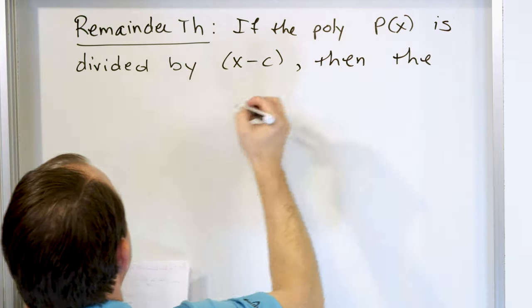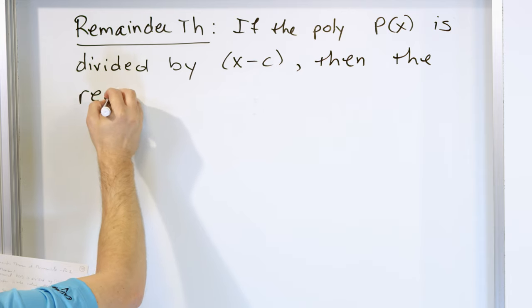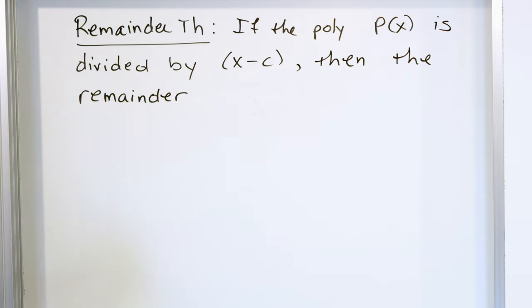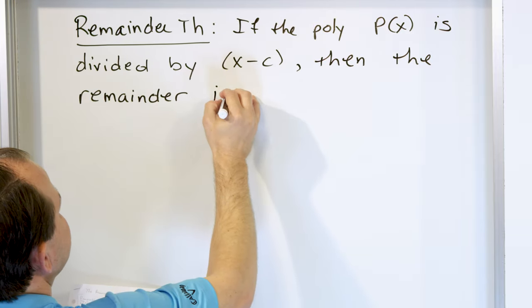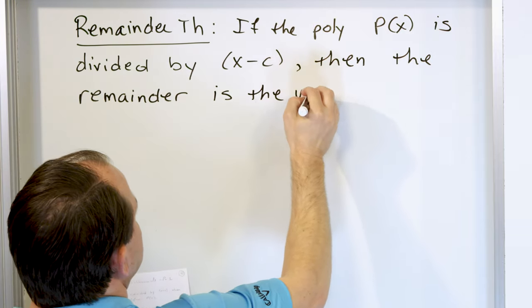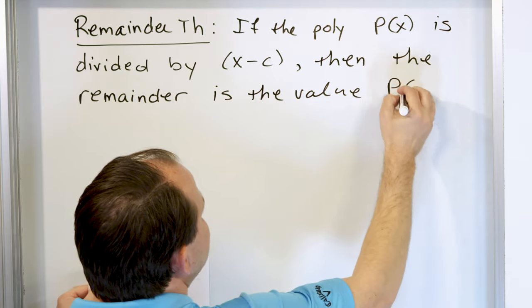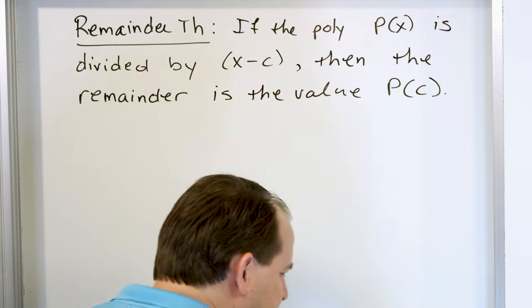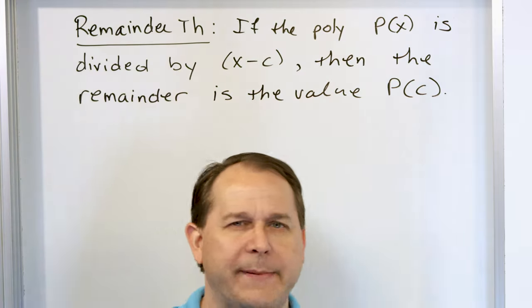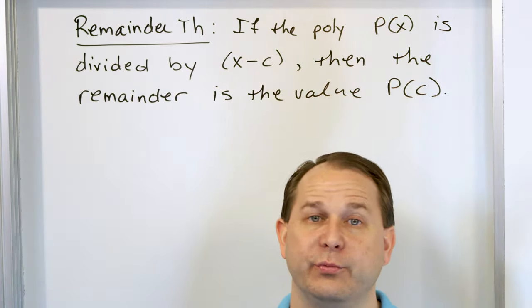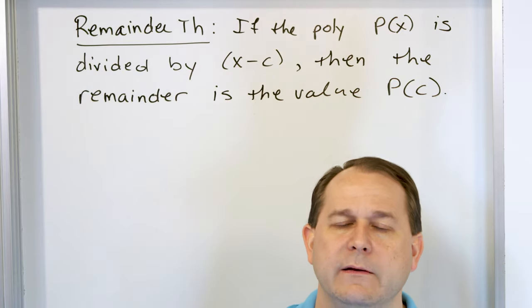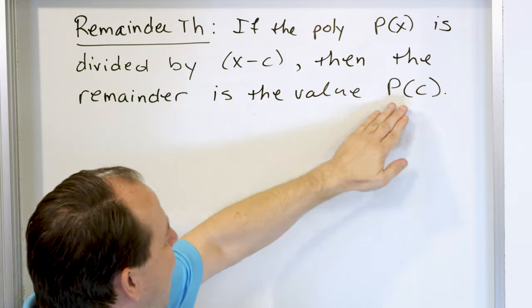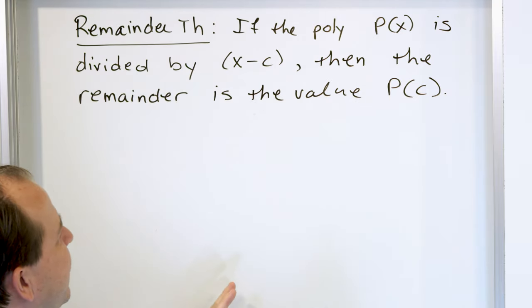Then the remainder — that's why it's called the remainder theorem — when you do that division, the remainder left over is the value p evaluated at c. I'm going to let that sink in because it doesn't make a lot of sense. We normally think about remainders as having something to do with division, but now I'm telling you that this remainder is connected to the value p of c.